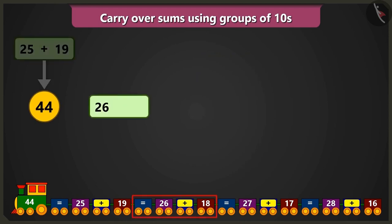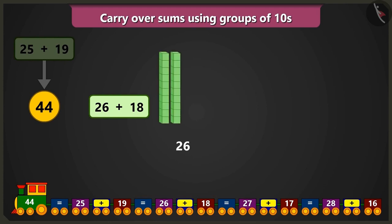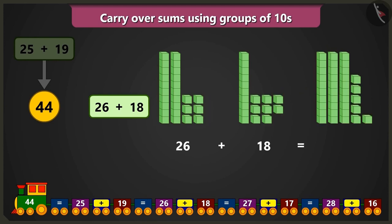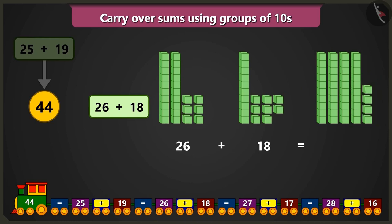Now will the other numbers of this train, 26 and 18, also add up to 44? Yes! Let us add 26, which is 2 tens and 6 ones, to 18, which is 1 ten and 8 ones. Adding 6 ones and 8 ones will result in 14 — that has 1 ten and 4 ones. So here 4 tens and 4 ones will add up to 44.